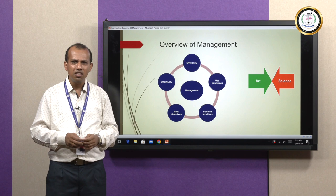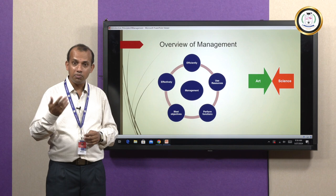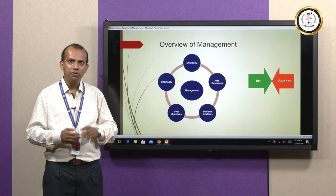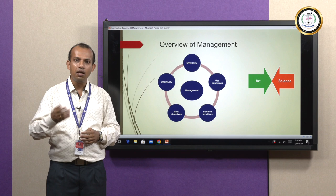Science teaches us what to know. It contains underlying principles and theories developed through continuous observation, experimentation, and research. The answer is that management includes both, because the art of managing begins when the science of managing stops, in order to make management complete.